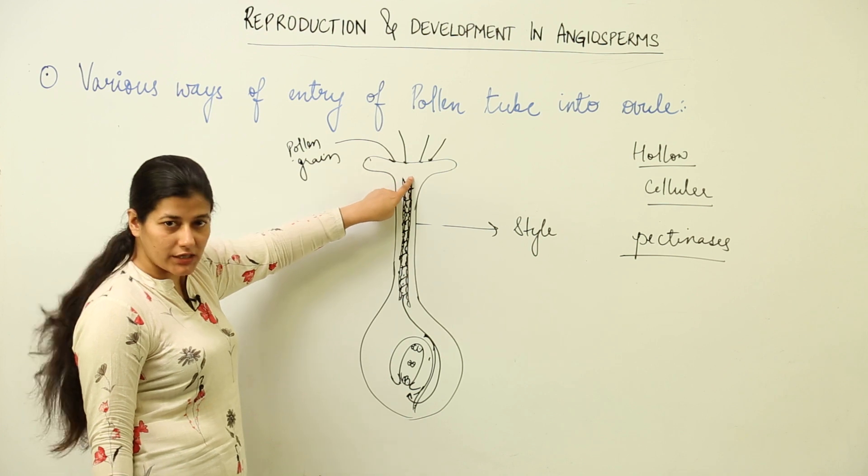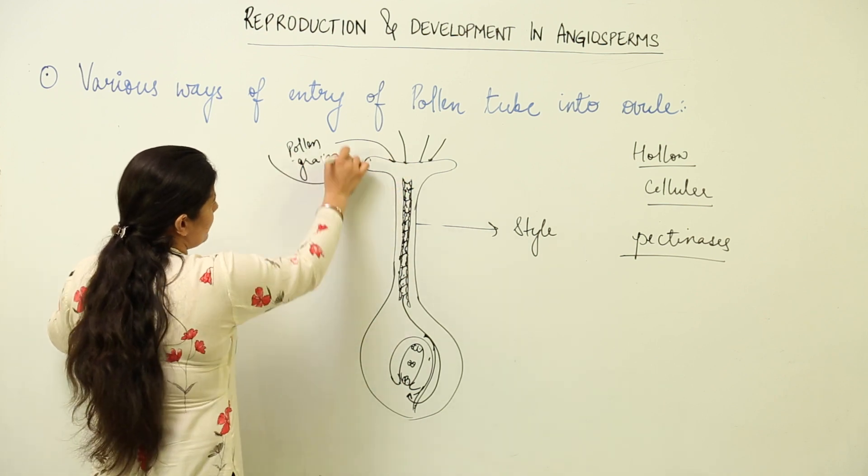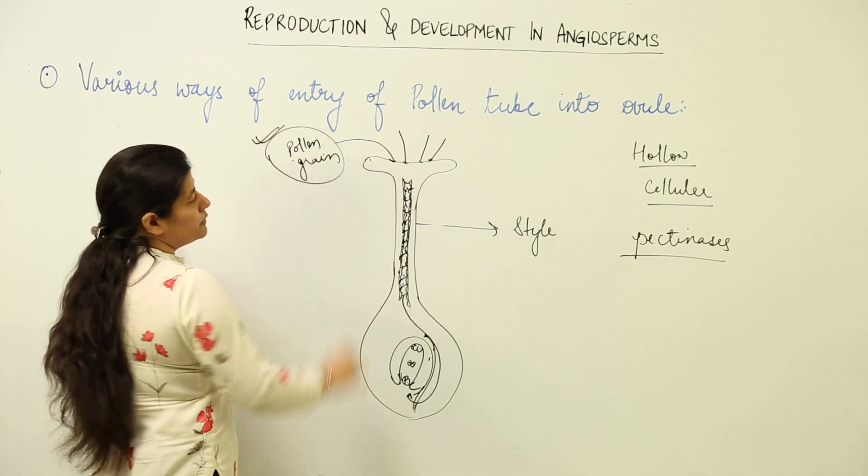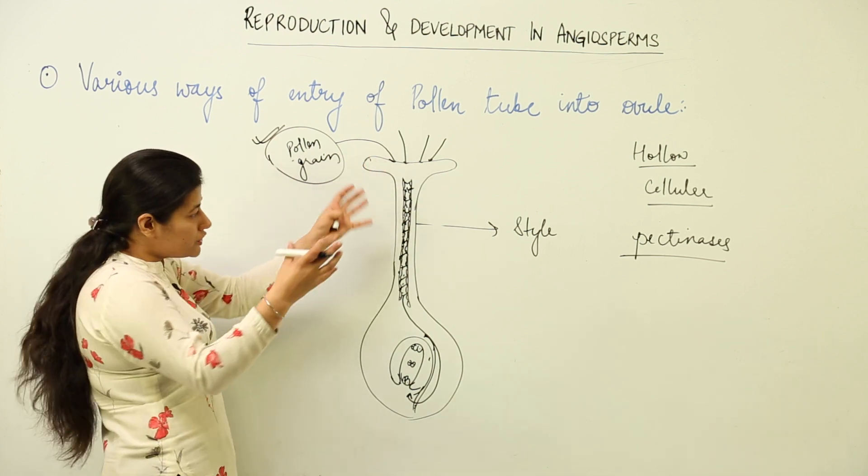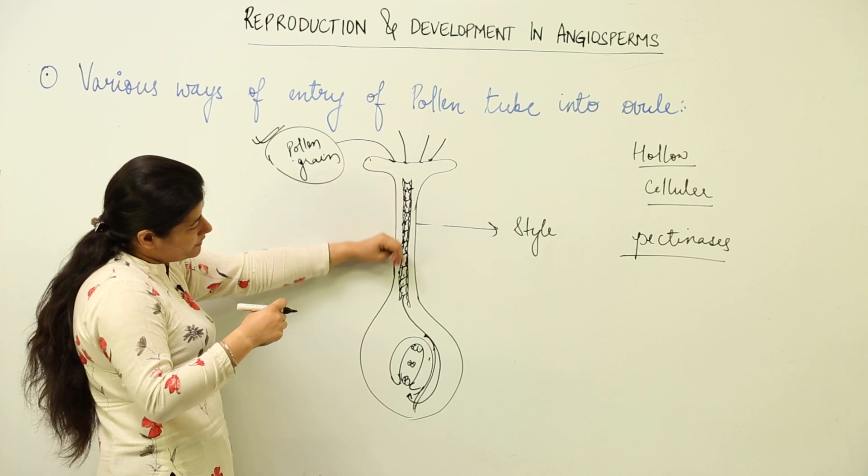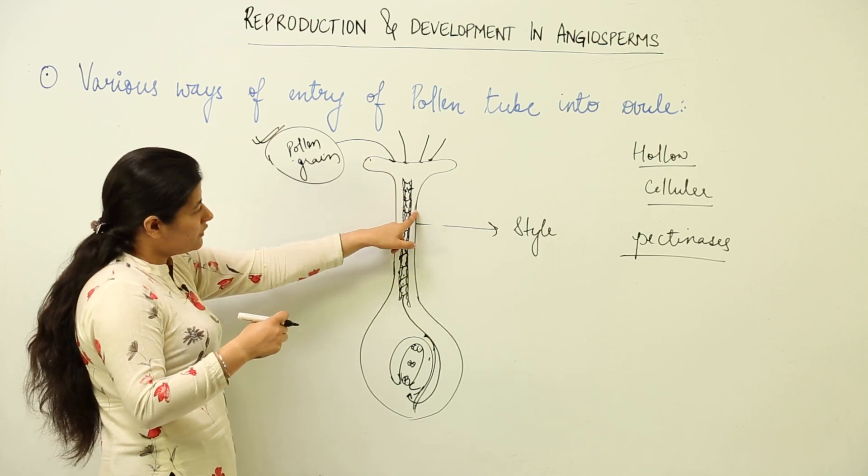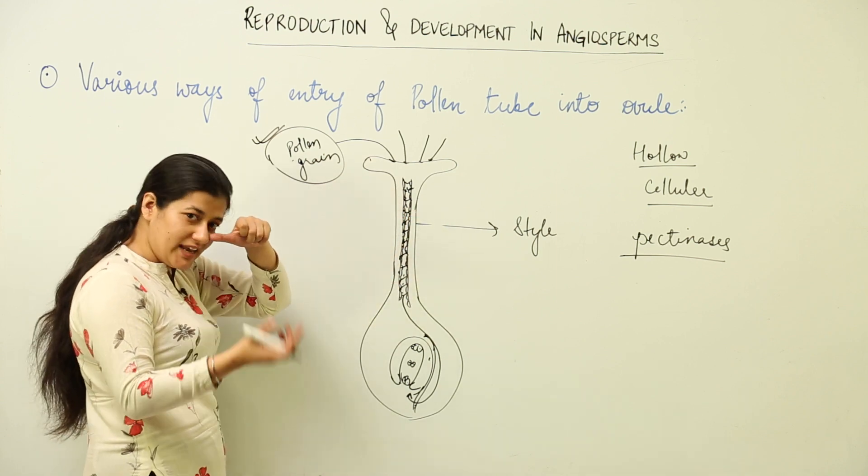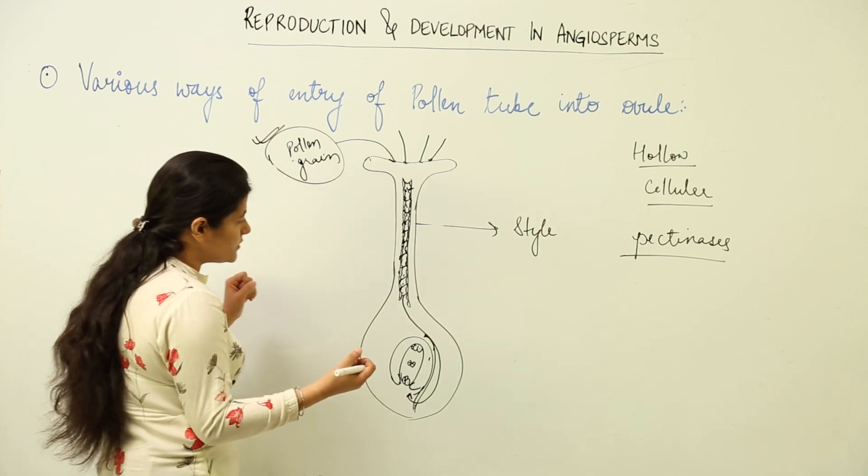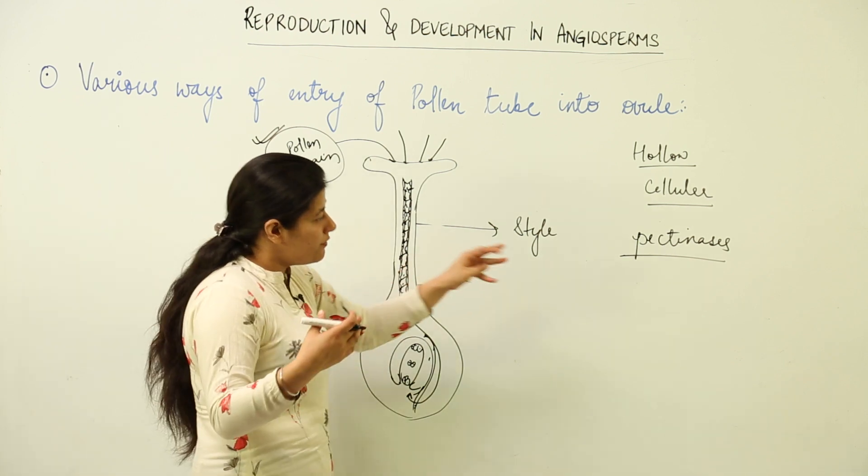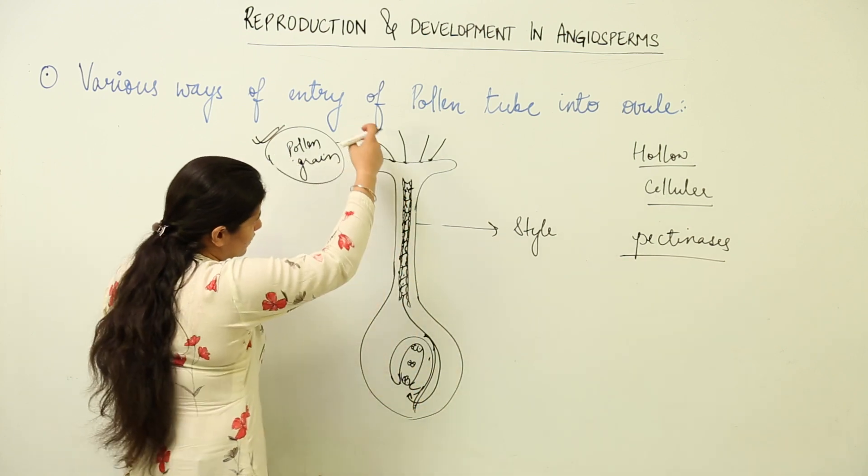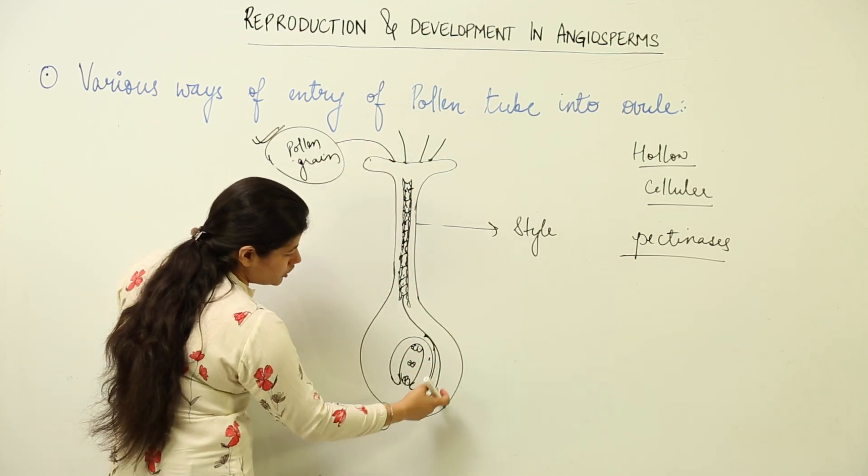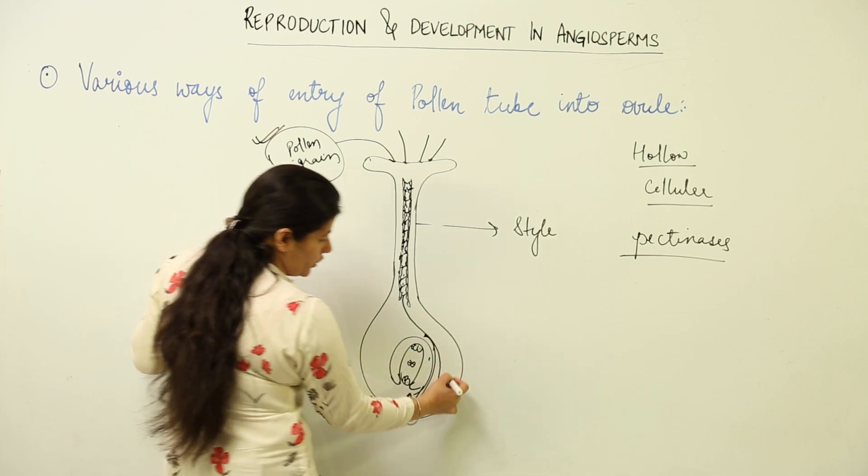All the energy for these two initial processes in the beginning would come from the vegetative cell of the pollen grain. Pollen grain in the beginning would provide the energy. Later on, the energy requirement for development of the pollen tube would be taken from the cells of the style itself, which would be surrounding that pollen tube. Apart from that, many digestive enzymes would be secreted by the pollen tube.